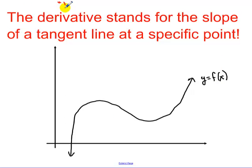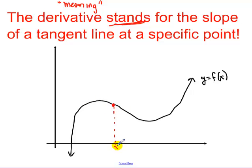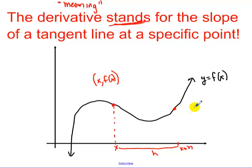This is the meaning behind the derivative — not the definition, but the meaning. The derivative represents the slope at a specific point. So I have some x value, I go over some h units to get x plus h, I go up and look at that point. This point here is x, f of x.